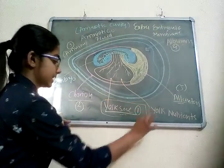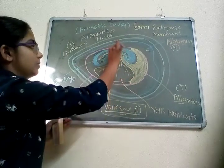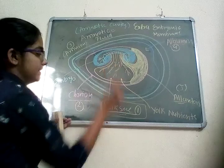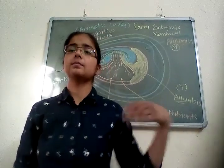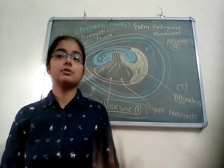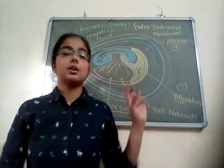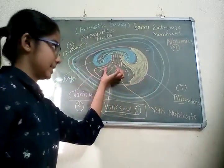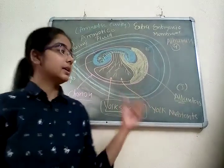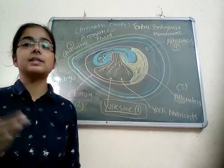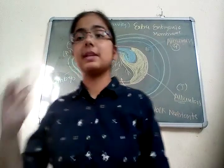The first one is the yolk sac, which is connected to the embryo. The yolk sac contains various types of yolk. We know that yolk is one type of nutrient source. The chick is included in the Aves class of animals, which undergoes external development present in the egg.